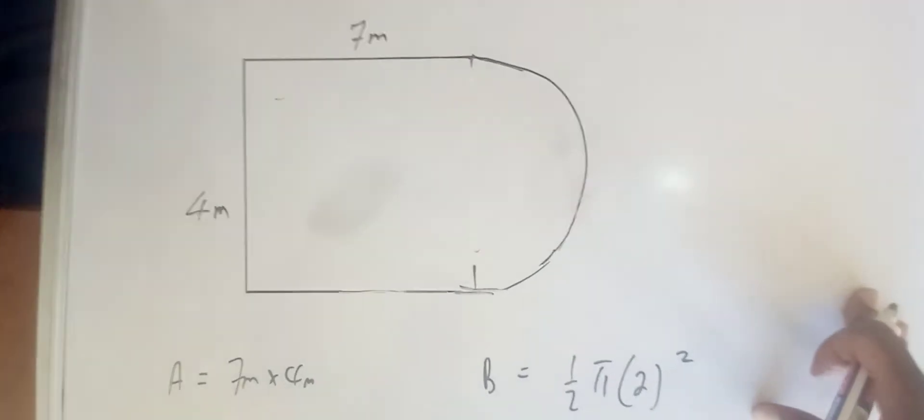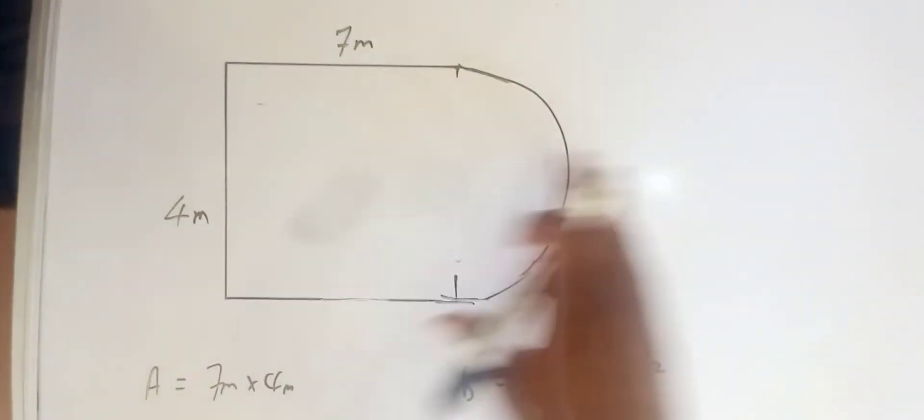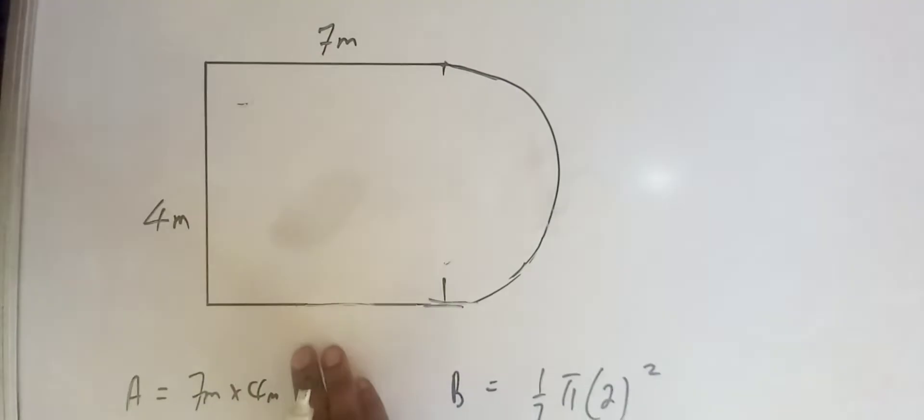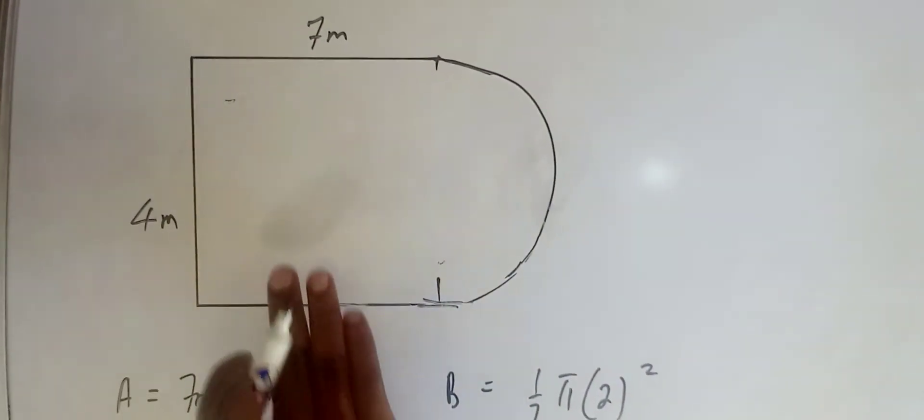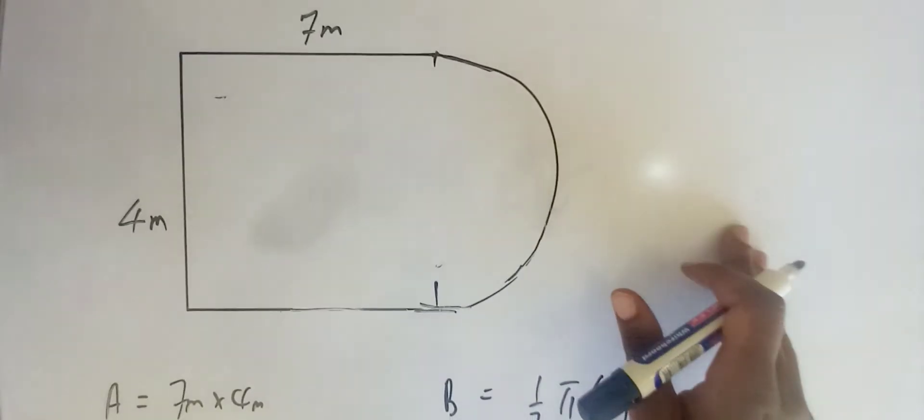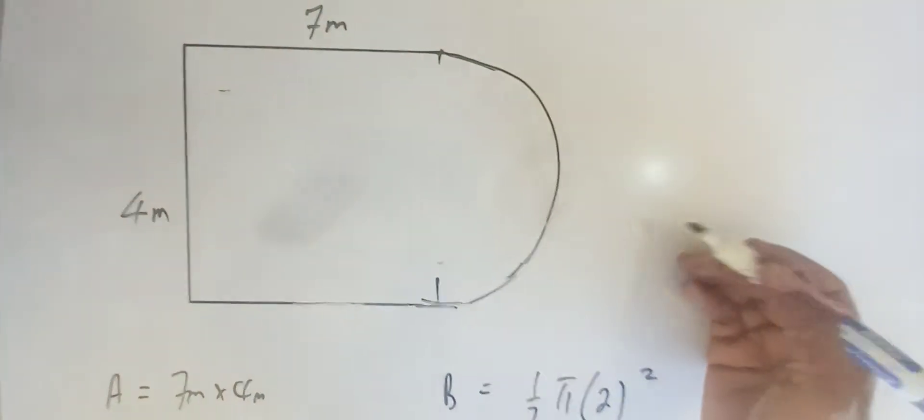All right, so we are expected to find the area of this diagram. What you need to do is look into the shapes that make this shape.